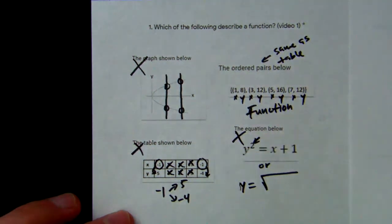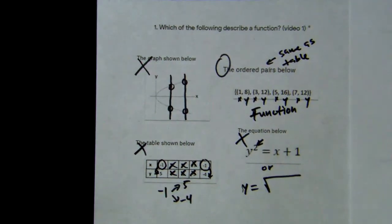So we know that this one is not a function. Our answer is the ordered pairs.